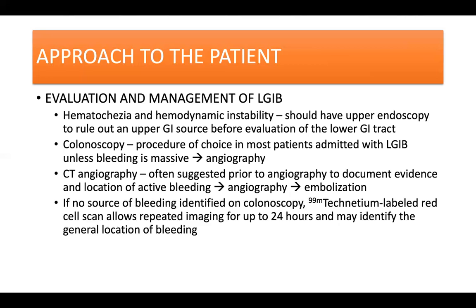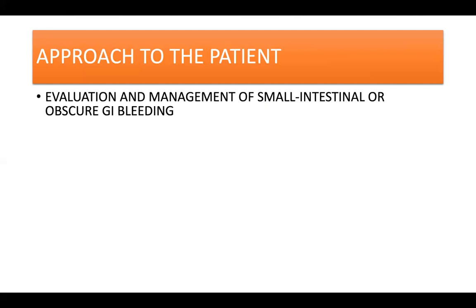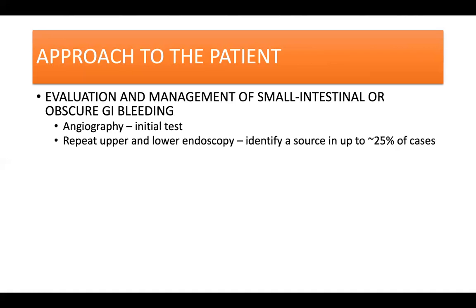In patients with no source of bleeding identified on colonoscopy, RBC tagging may be done, which allows repeated imaging for up to 24 hours and may identify the general location of the bleeding. In patients with small intestinal or obscure GI bleeding, current guidelines suggest angiography as the initial test, with CT angiography or RBC tagging prior to angiography if the patient's clinical status permits. For others, repeat upper and lower endoscopy may be considered as the initial evaluation, because second-look procedures identify a source in up to 25% of cases. A push enteroscopy may be done to inspect the entire duodenum and the proximal jejunum.